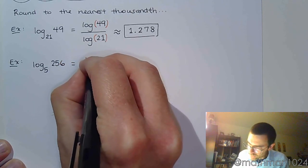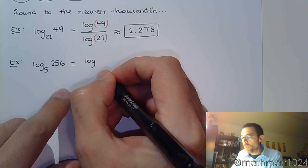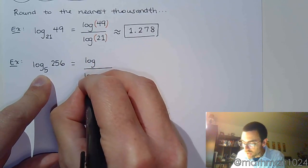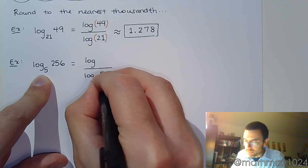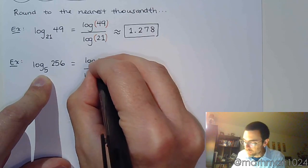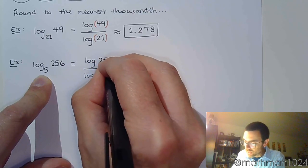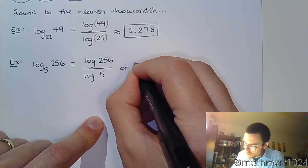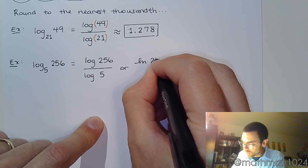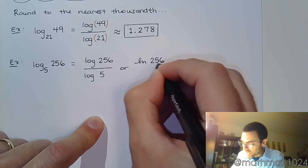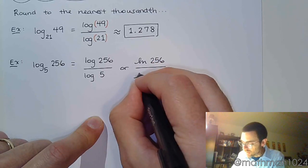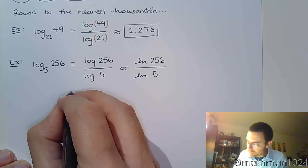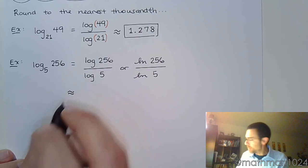So, whether you want to say log or natural log is up to you. What you need to understand is that the base of your original logarithm is what goes in the bottom. The base goes in the bottom. And the 256, it goes up top. So you can say it this way, or you could use natural log just like we were showing earlier. So I can say natural log of 256 over the natural log of 5. Either way you say it, it's going to be perfectly fine.